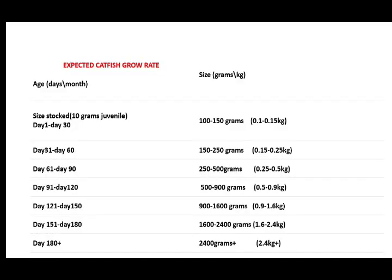When you look at this table, the reason I bring this table is for us to assess our quality feed after production, or to assess the growth of our fish — whether they are doing well or not. If you stock your fish, you are expected to have a particular result based on time and weight. For example, as you can see in this table, from day 1 to day 30 you are expected to have 100 to 150 grams, that is 0.1 to 0.15 kg.